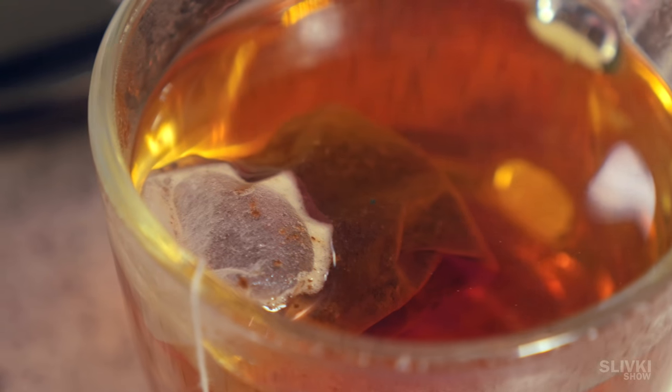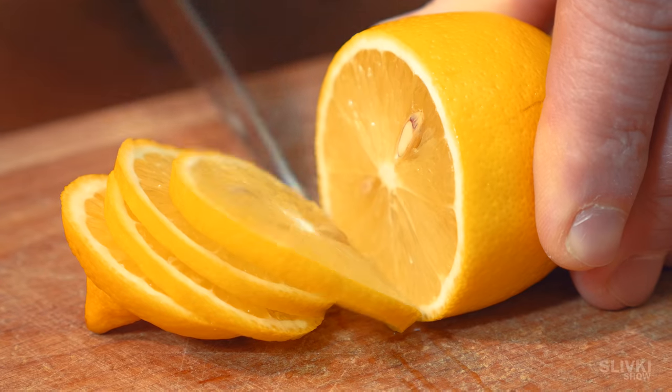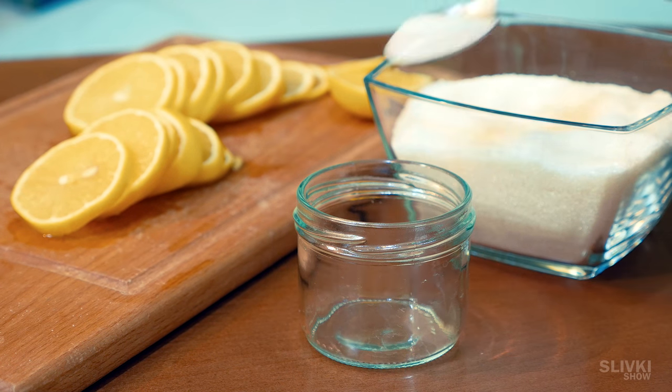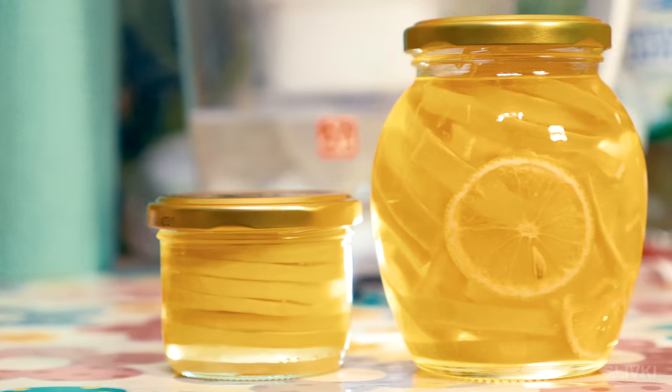I'm sure many of you love enjoying a cup of delicious tea. Take a lemon and slice it into pieces. Then take a jar and put lemon slices there, mix it with sugar. So, we are ready to make lemon tea.